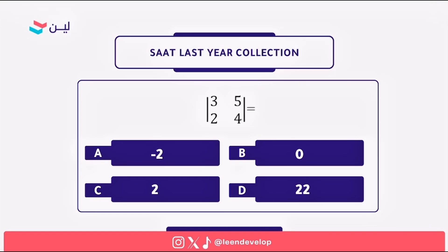The next question is the easiest question, and I will be really disappointed if any of you get it wrong. All we need to do is multiply 3 by 4, which equals 12, then multiply 5 by 2, which equals 10. Then subtract: 12 minus 10 equals 2. The answer is C.